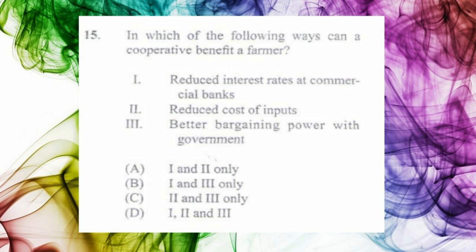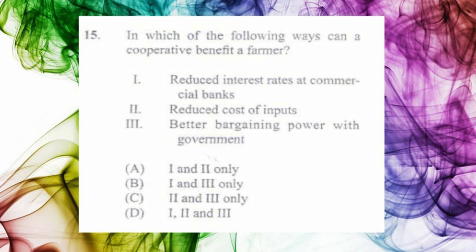Question number fifteen: in which of the following ways can a cooperative benefit a farmer? One) reduce interest rates at commercial banks, two) reduce cost of inputs, three) better bargaining power with the government. The best answer from the list is c) two and three only. Cooperatives don't have the power to directly reduce commercial bank interest rates, but through government bargaining, incentives may indirectly affect input costs.